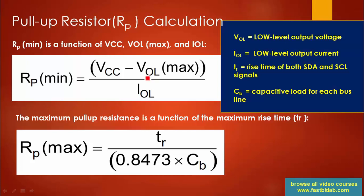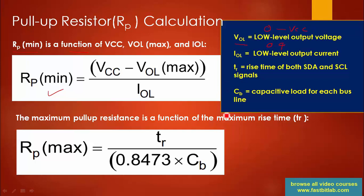To calculate the pull-up resistor, you have two equations. The first equation gives you the minimum value of the pull-up resistance required for your application: RPU_min = (VCC − VOL_max) / IOL. This is essentially V divided by I, where VOL means the low-level output voltage. Ideally VOL is zero, but in the I2C specification, up to 0.4 V is considered the low-level output voltage.